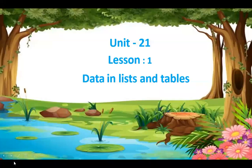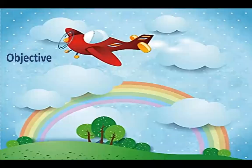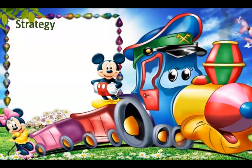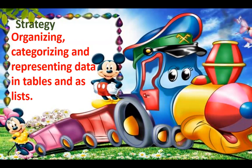Good morning children. Welcome to today's MagZoom lesson. It's Unit 21, Lesson 1, Data in Lists and Tables. The objective is to answer a question by collecting and recording data in lists and tables. The strategy is organizing, categorizing, and representing data in tables and as lists.